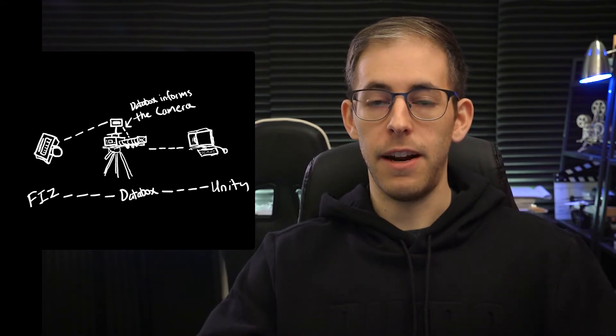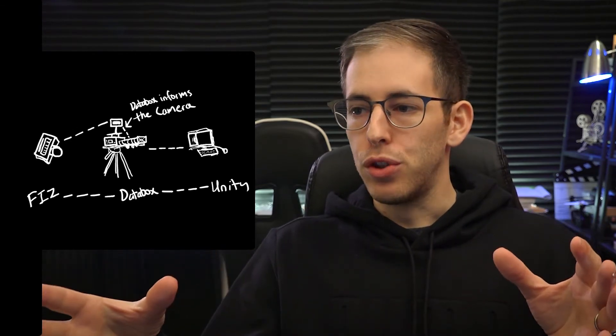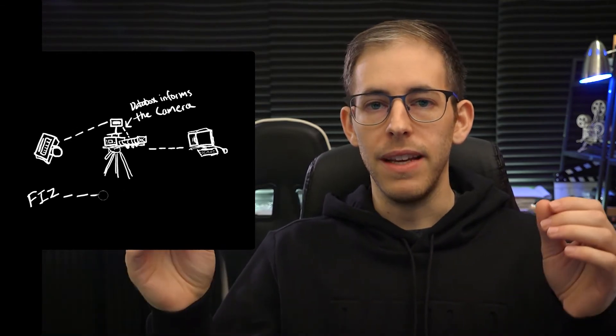This type of setup I think is going to be extremely popular in the future. The third way to control the camera is with Unity, where the focus unit is interfaced with Unity on the computer directly, and then Unity controls the camera. We can do this today with an Arduino unit — we're going to build an Arduino unit with a focus knob and an iris knob, and that's going to control, through Unity, the physical camera.